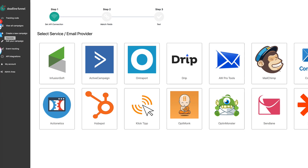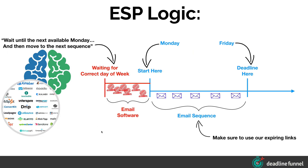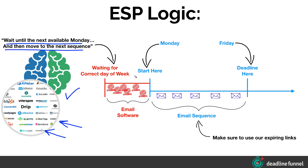The other way you can do this is using your email software logic — ESP stands for email software provider. The brain here is one of the email software providers, such as a CRM, Infusionsoft, ActiveCampaign, or Drip. When doing it this way, you don't have to take advantage of our new hybrid deadline feature. Instead, you use the logic inside your email software to say: wait until the next available day of the week, then move to the next sequence. You're choosing the start, not the end — but since the sequence is a finite amount of time, when you're starting everyone on the same predictable day of the week, you'll end on the same predictable day of the week.